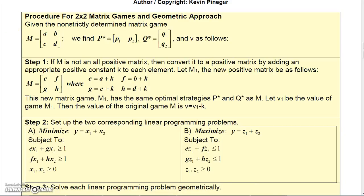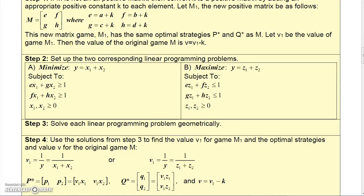So we're given this matrix, this game matrix, and these are our strategies that we're going to use, and V is V. The first step is if M is not all positive, we convert it to a positive matrix by adding a constant, and you saw me do that a minute ago. Step 2, we set up two corresponding linear programming problems.